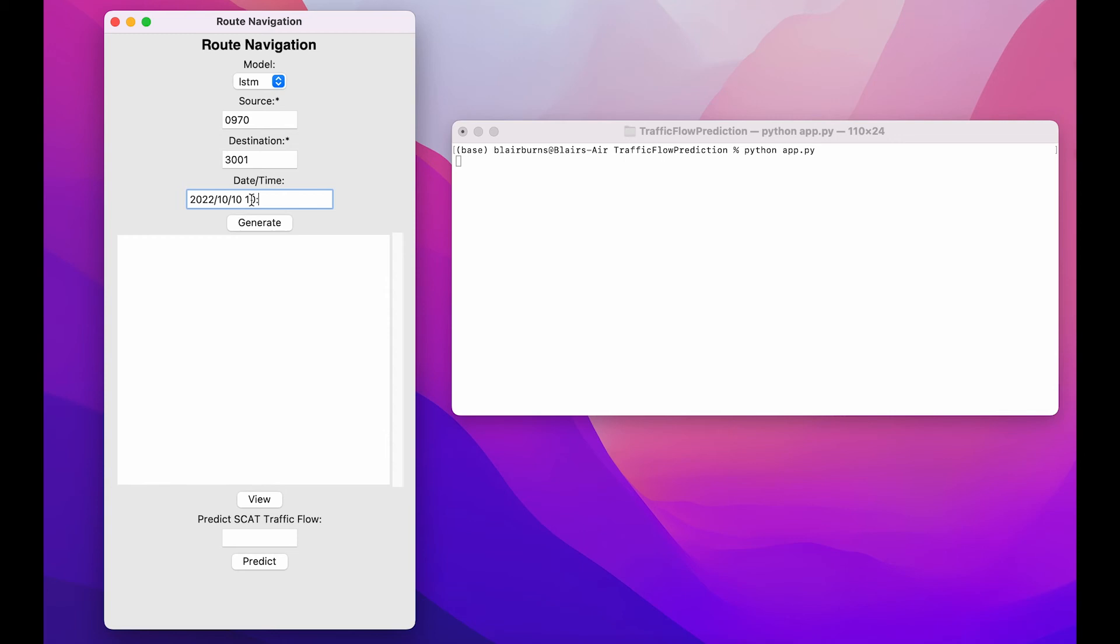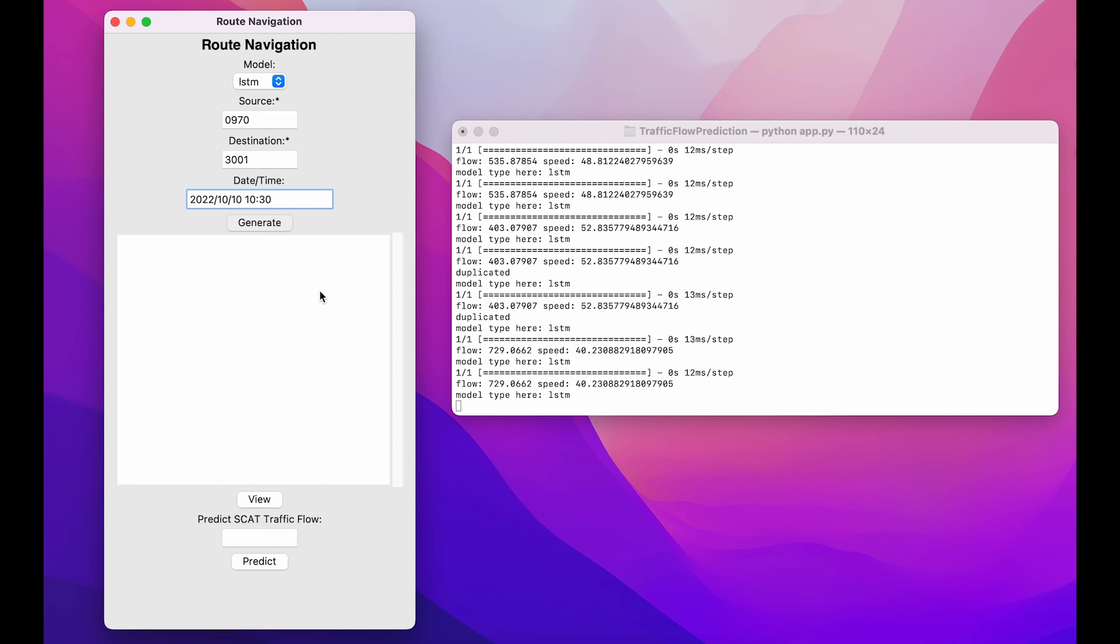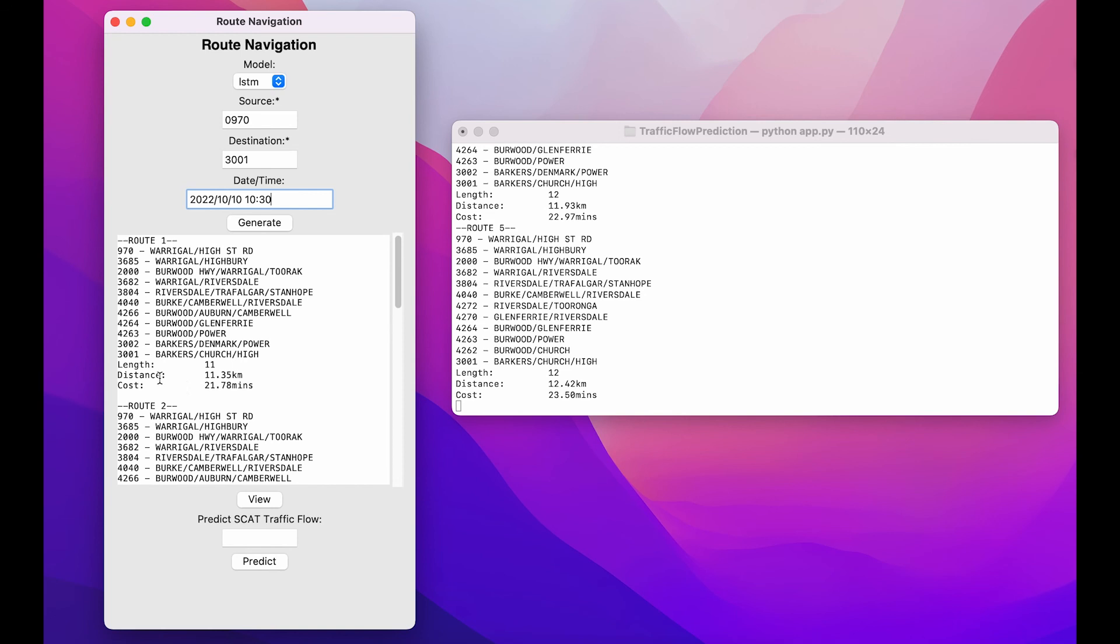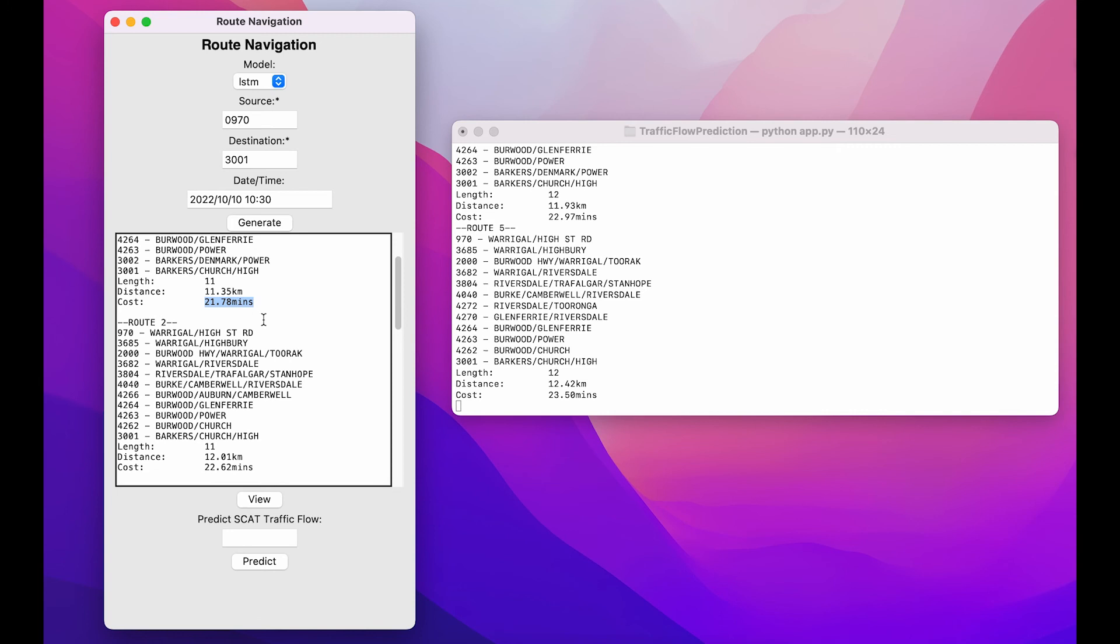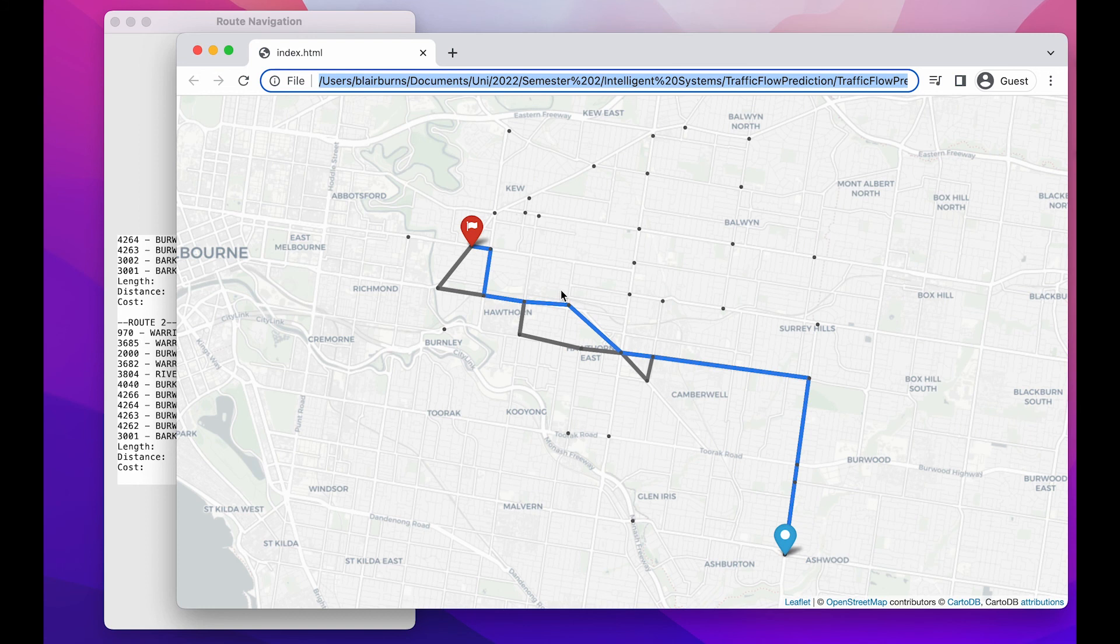Once the routes generate, you are given five options, each with the total distance and the estimated time it will take to travel that route. You can then view these routes in a web browser to see the optimal path alongside any other routes that it has predicted from the starting point to the destination.